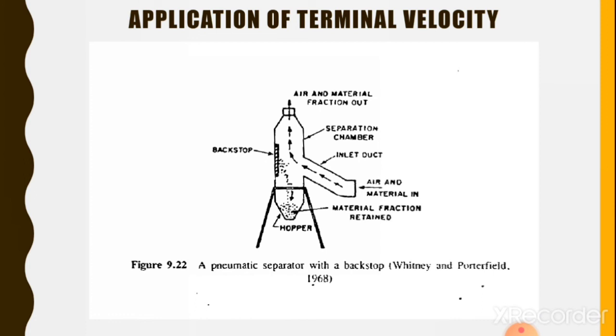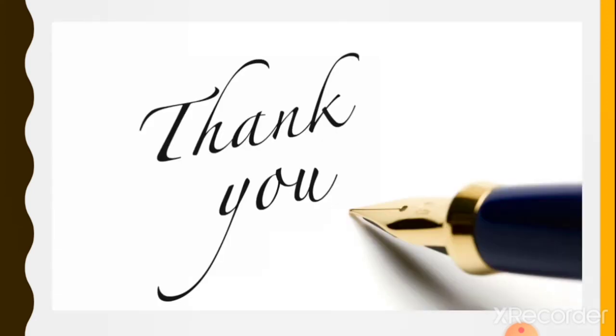This image shows the application of terminal velocity — a pneumatic separator in which various parts of the machine are shown. By applying aerodynamic properties like terminal velocity, impurities are separated from the grain. In this way we have learned about the concept of terminal velocity, its formula, applications, and terminal velocity expressions for objects of various shapes.